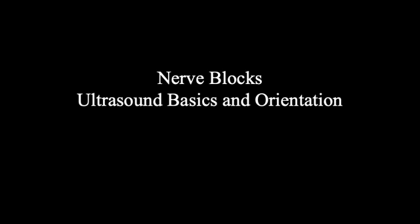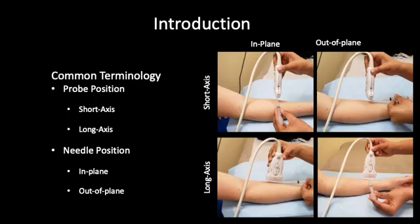In this video we'll be discussing the basics of using ultrasound for nerve blocks. We'll start by talking about common language used when describing probe orientation and needle orientation. There are two parts we refer to when describing our orientation: the position of the ultrasound probe and the position of the needle.